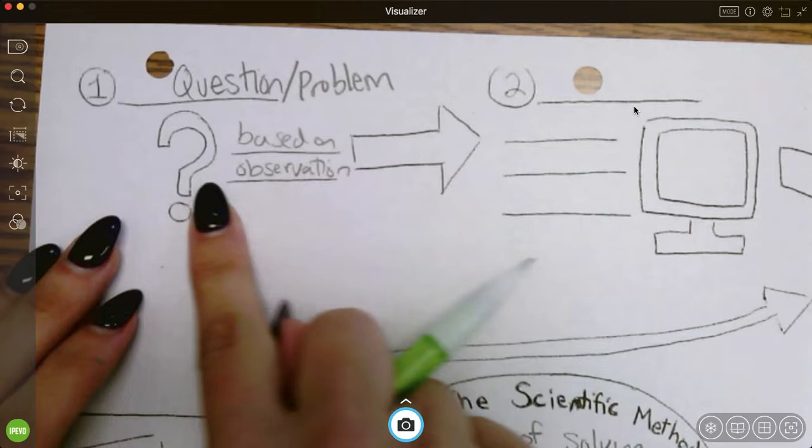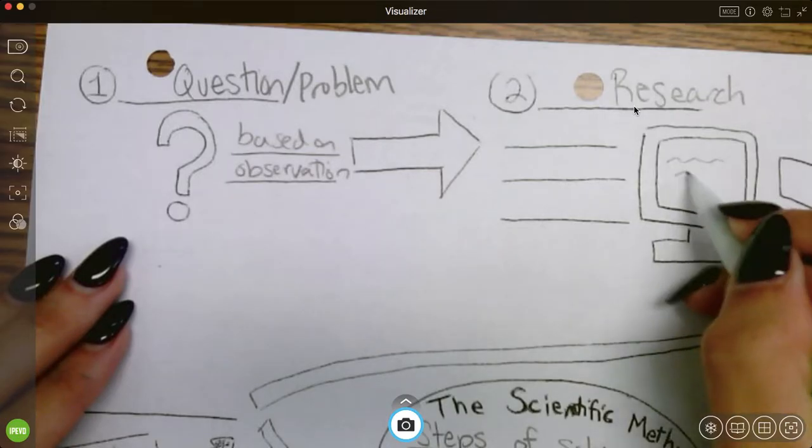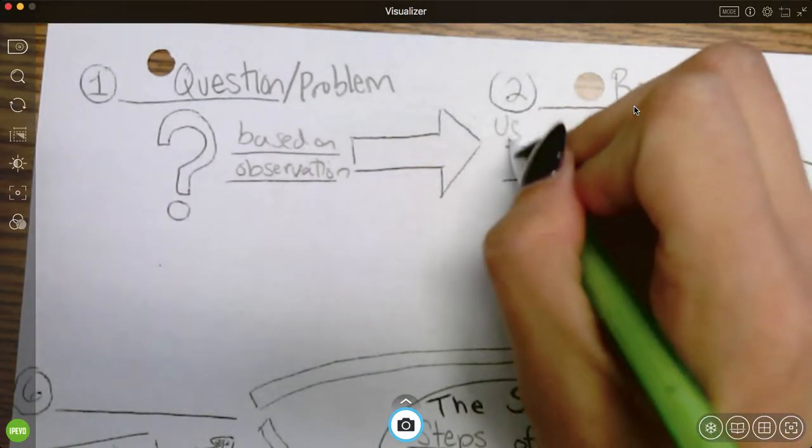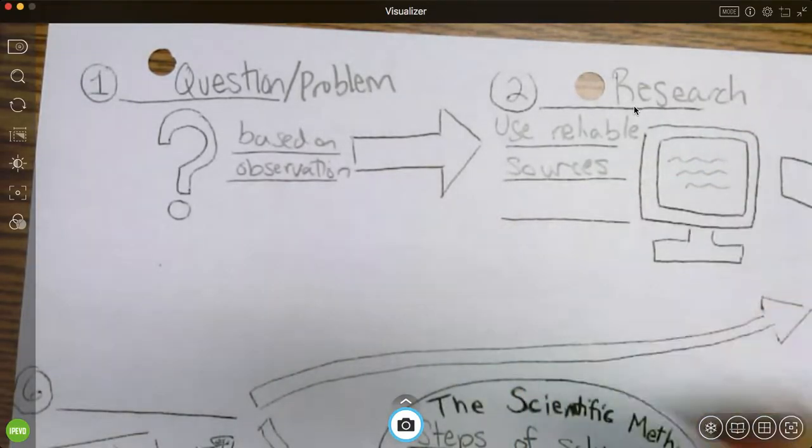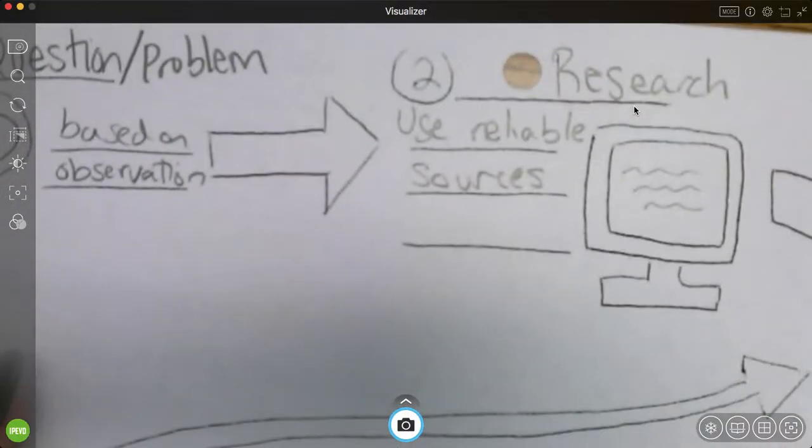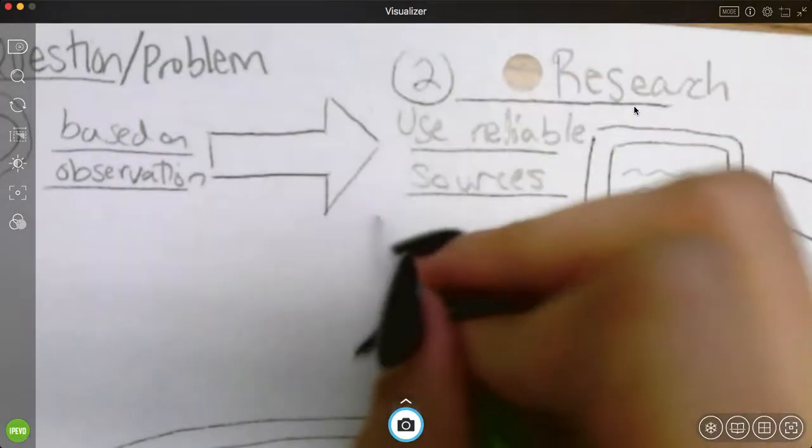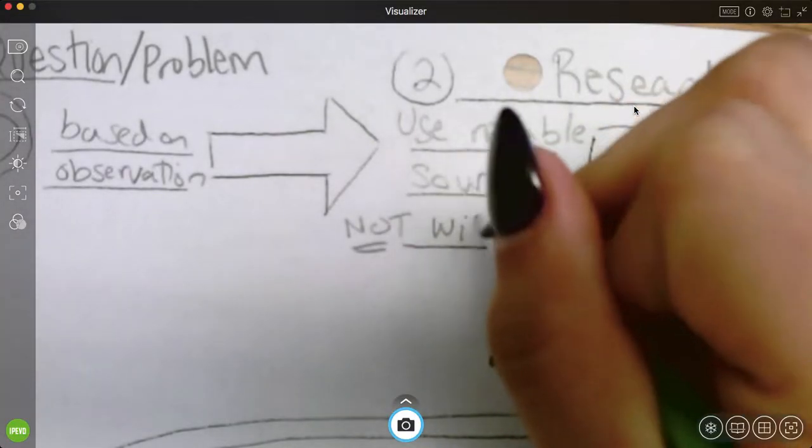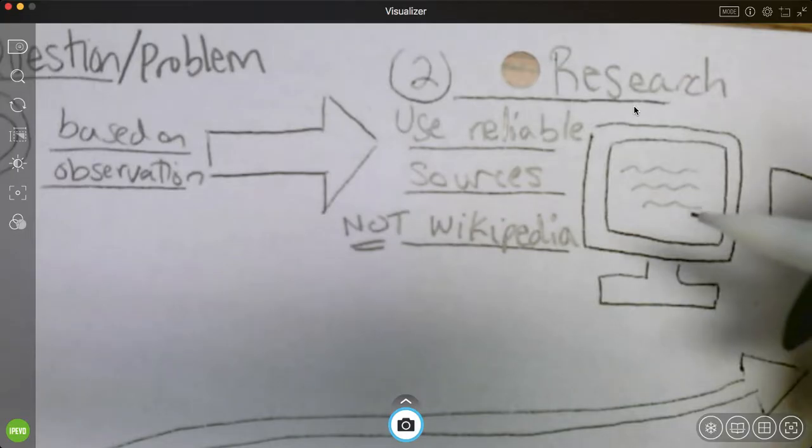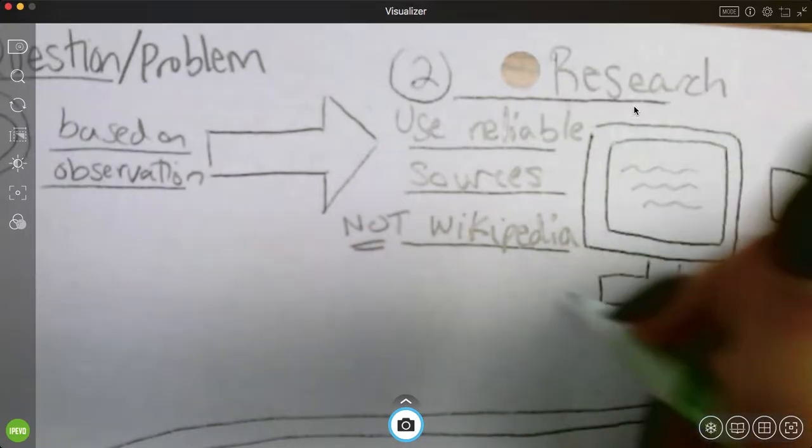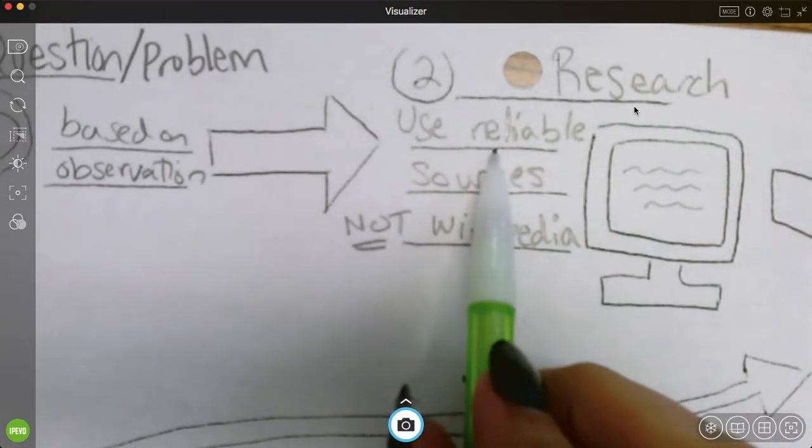So once we have our question, we're going to do this next step. And this next step is research. And that's why we have a little computer. You're going to go see what other people say. We want to use reliable sources. A reliable source is going to be one that is accurate, one that you know the people who wrote it have some idea what they're talking about. So we're not going to use something like Wikipedia. Now, Wikipedia is a really cool website, and it can be kind of useful as a starting point, you know, starting to look for research. But you don't want to use Wikipedia because anybody can change a Wikipedia article, and they don't necessarily have to know what it's about.